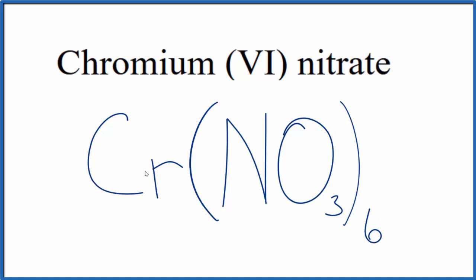If you're given this formula and asked to write the name, you know the nitrate ion is 1 minus. So if you have 6 of them, the chromium is going to have to be 6 plus to balance that. So we write chromium 6, and then we have our nitrate here.